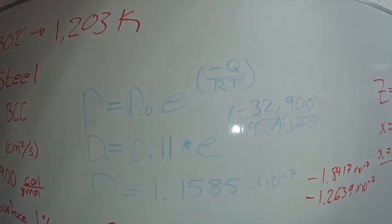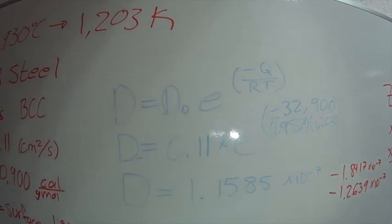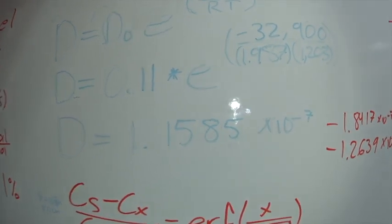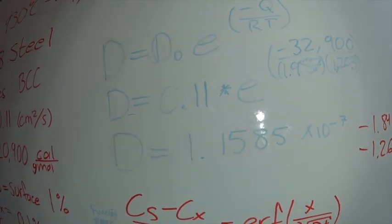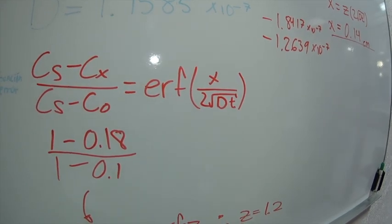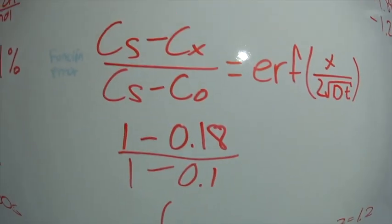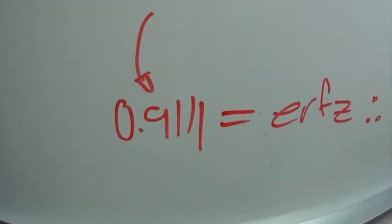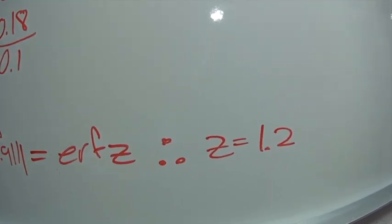The first step is to apply the formula D equals D₀ times e to the minus Q over RT. Substituting the data, we get a diffusion coefficient D of 1.1585 times 10⁻⁷ cm²/s. Afterwards, we calculate the error function by applying the data, and we get a value of 0.911. From tables, we get that our Z value is 1.2.